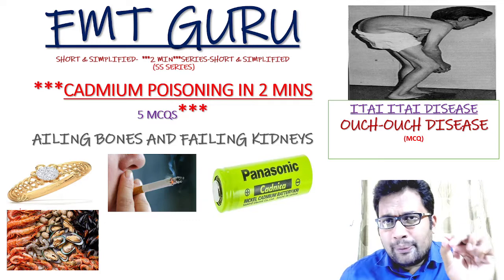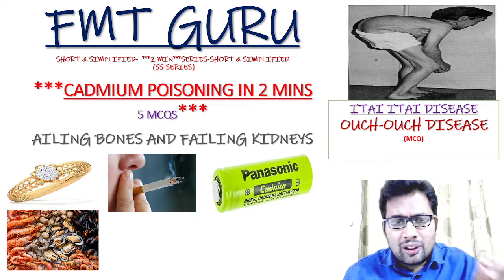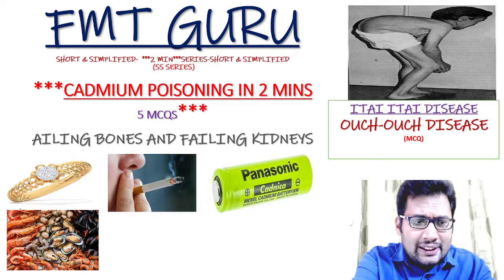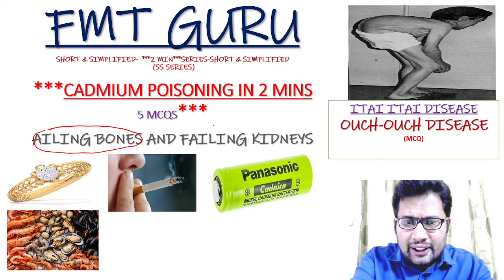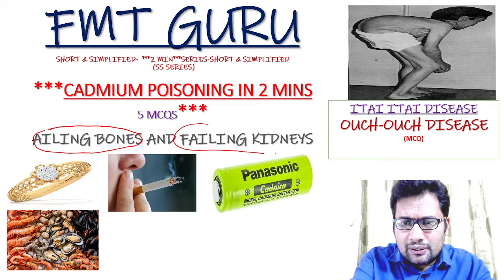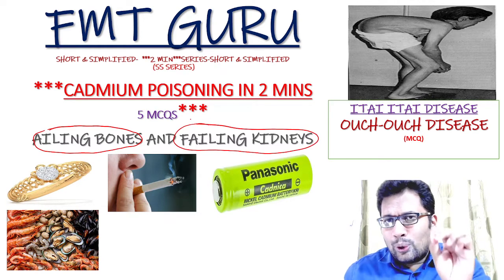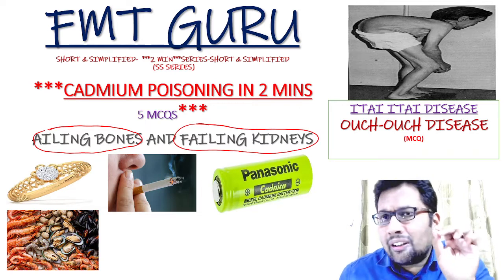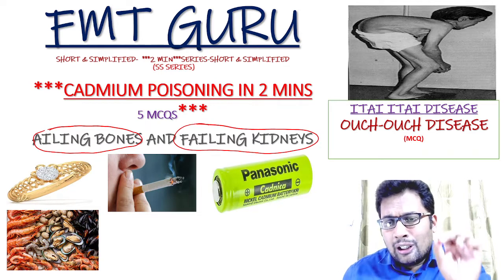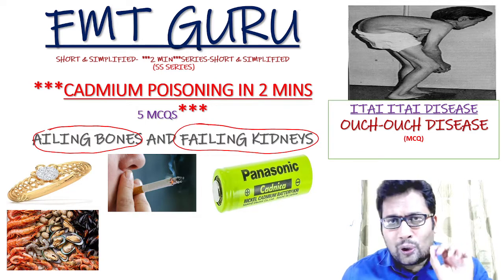In cadmium poisoning, please remember 2 important keywords. One is ailing bones and the second one is falling kidneys. Ailing bones means osteomalacia and fractures. Falling kidneys means nephrotoxicity.